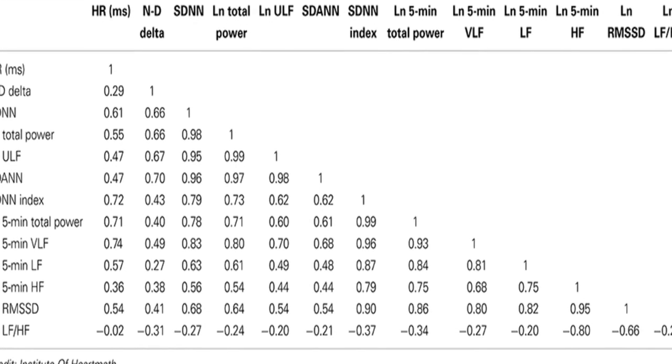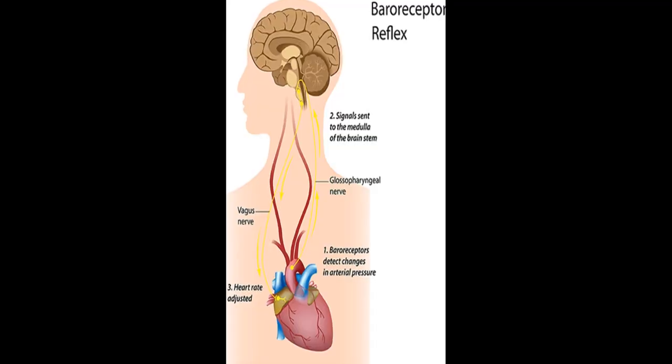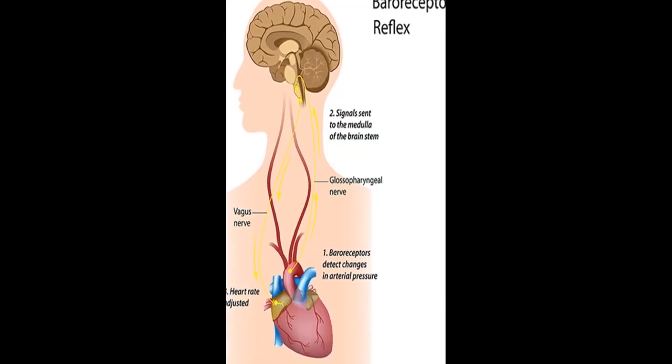Heart rate variability, HRV, is an emergent property of interdependent regulatory systems that adapt to challenges and achieve optimal performance.